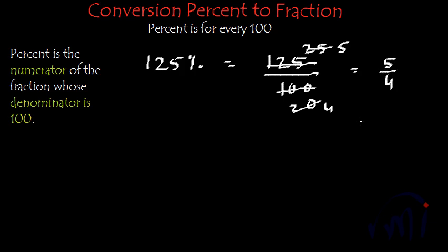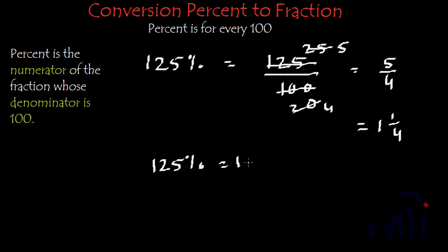Or if I write it as a mixed fraction, it will be: 4 × 1 = 4, so 1 and 1 by 4, which is 1 and a quarter. So 125 percent can be written as 1 and a quarter of the whole. This is the conversion of percentage into fractions.